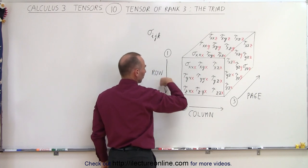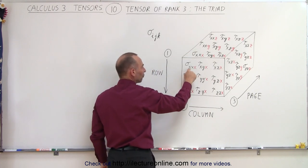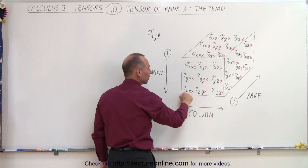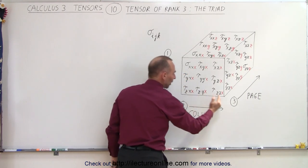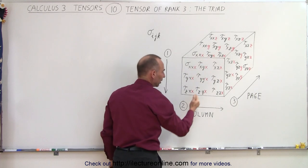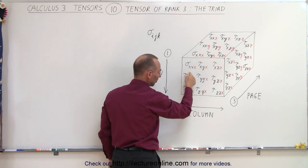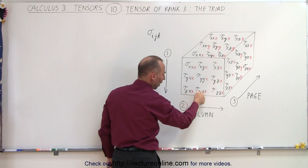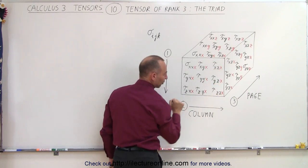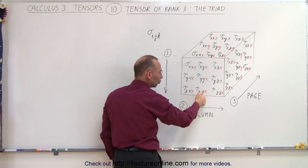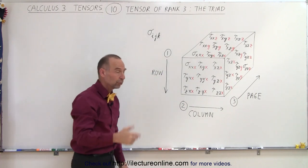The first subscript here, representing the rows, would go from 1, 2, 3, or X, Y, Z. Then going from left to right, we represent the three columns, so we go from the second subscript would be X for the first column, Y for the second column, Z for the third column, or would be 1, 2, 3 if you'd like to work with 1, 2, 3s.